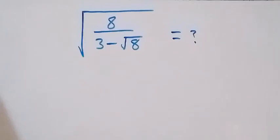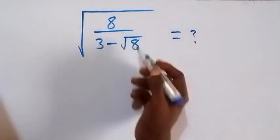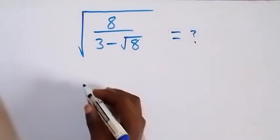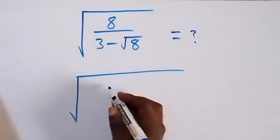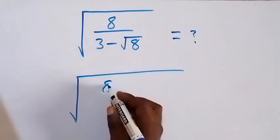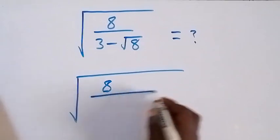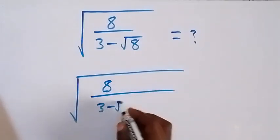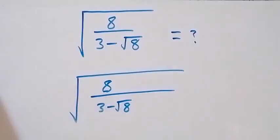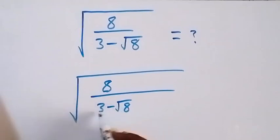Hello, you are welcome here. We are going to solve this nice square root problem. We can rationalize what we have inside, and this will become square root of 8 over 3 minus root 8. When we rationalize, we multiply the numerator and denominator by the conjugate.